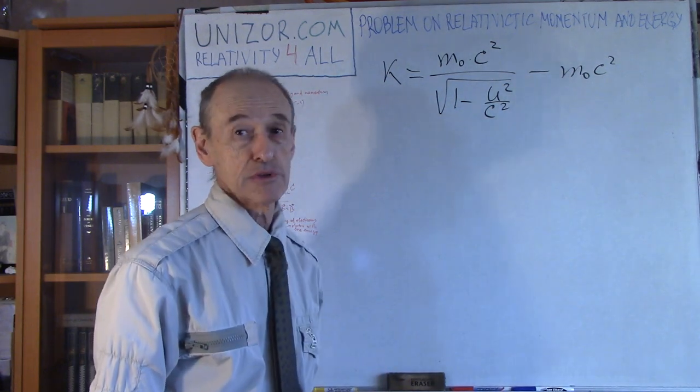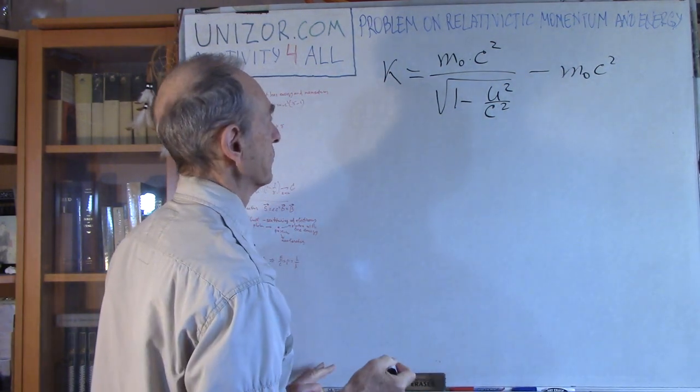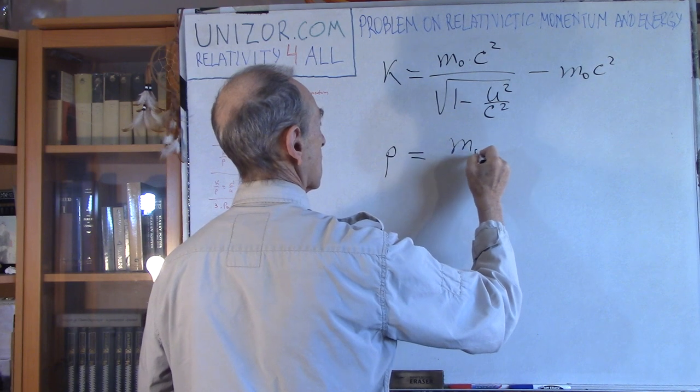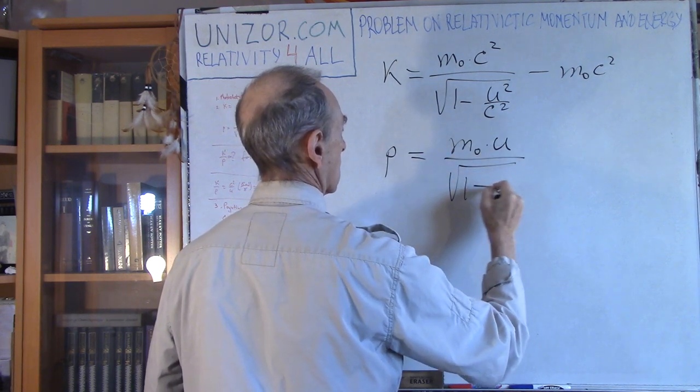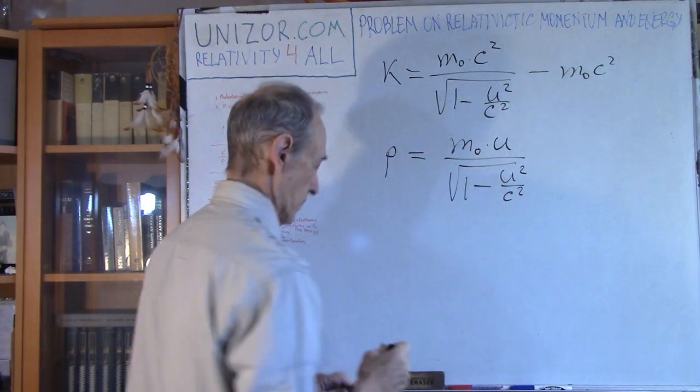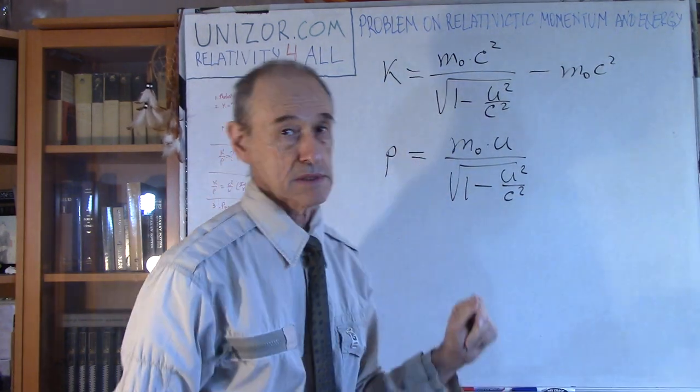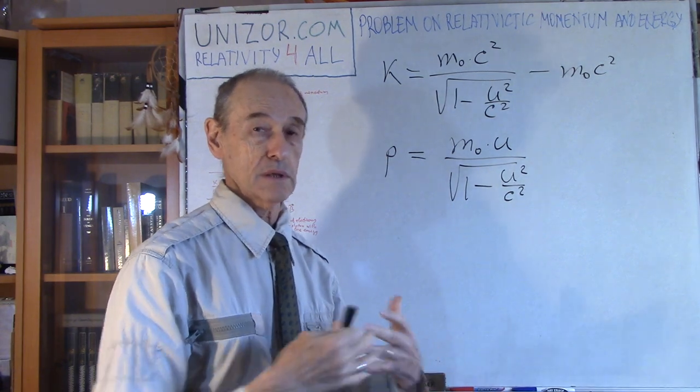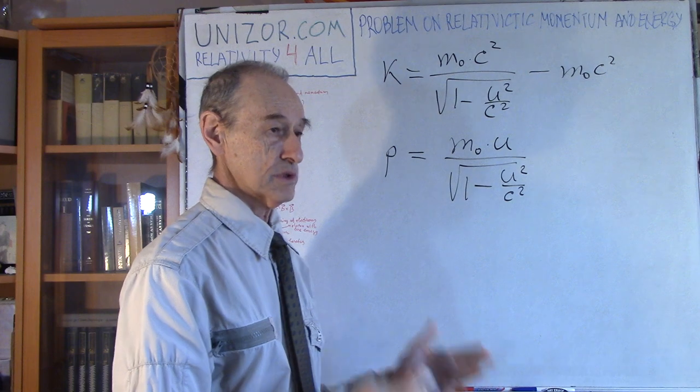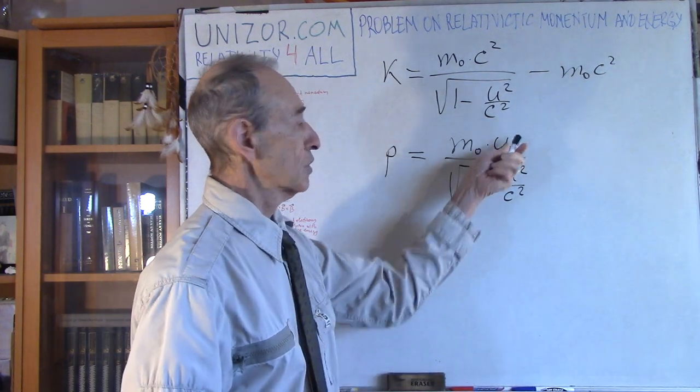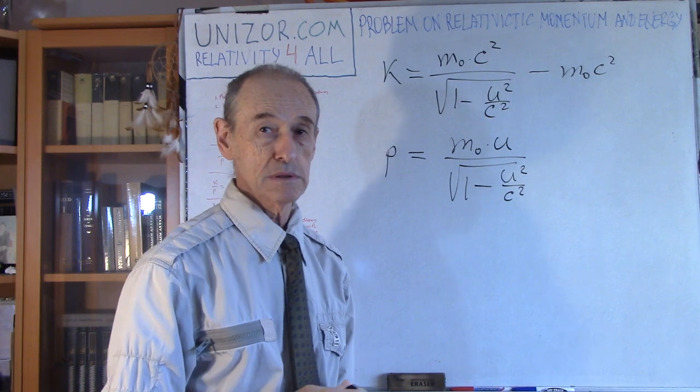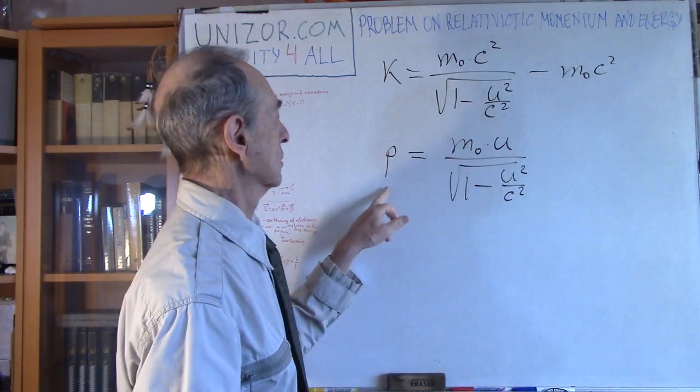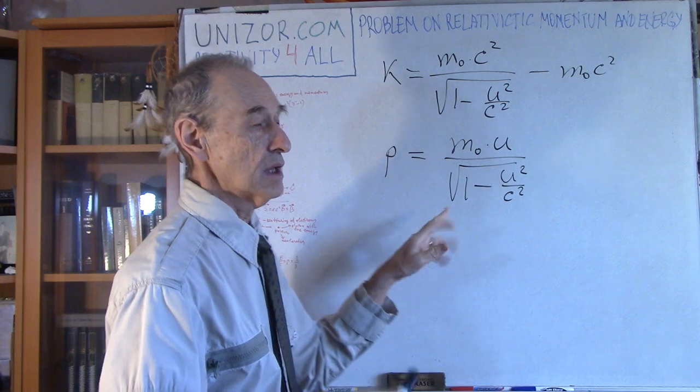In a previous lecture, we discussed the momentum of a moving body. m₀ is the rest mass in the system of coordinates tied to this particular object where the object is at fixed position. u is speed of this object.